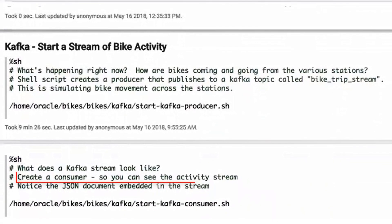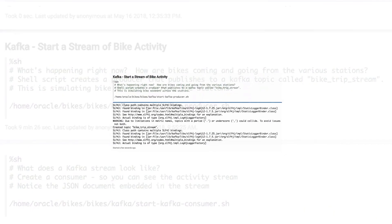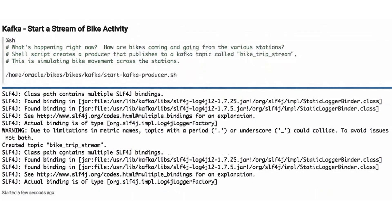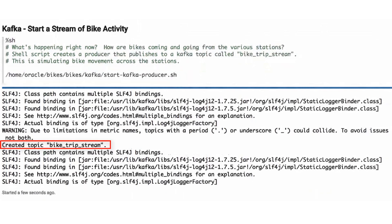Then we'll create a Kafka consumer so that we can preview the events. We run a shell script named Start Kafka Producer. This script creates a producer and the producer publishes a Kafka topic named Bike Trip Stream. The producer simply generates events that are written to this Kafka topic.